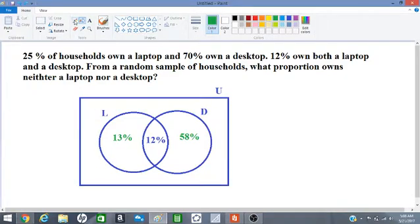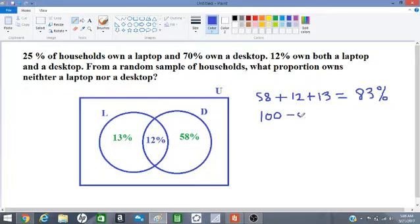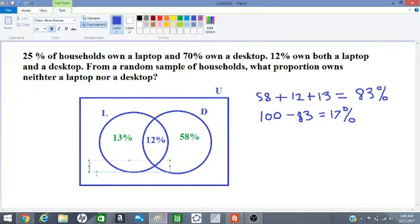So the total amount is 100%. So we add, we will have to add 58 plus 12 plus 13, which will give 83%. And then we will have to subtract the 83 from 100, which will give us 17%. So the answer is 17%, which would exist in this region of our Venn diagram.